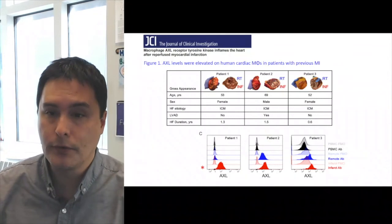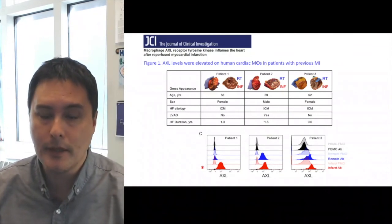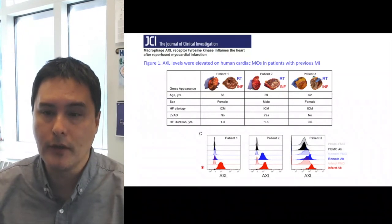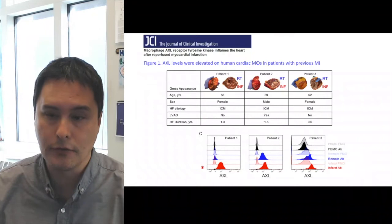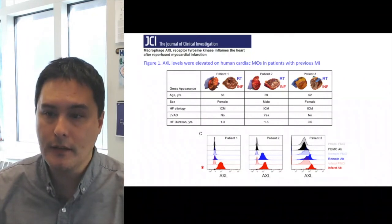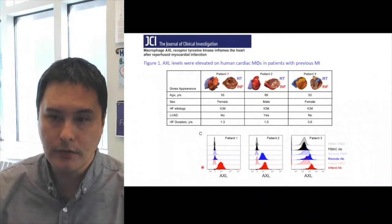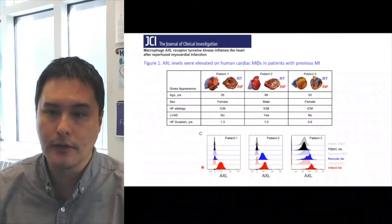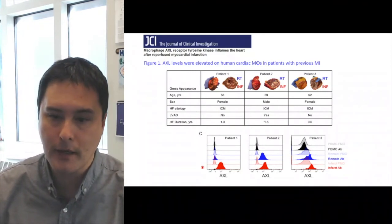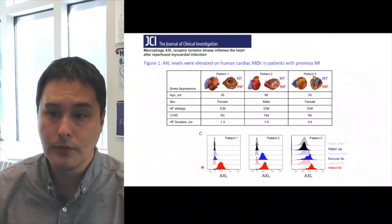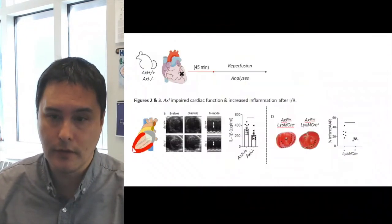One of the first experiments that Matt performed in collaboration with physician scientists here at Northwestern was to harvest patients' hearts of whom had previously been subjected to a myocardial infarction event. And as you can see in these three patients, Matt harvested both remote tissue and infarcted tissue and consistently found that AXL was expressed in cardiac macrophages that were proximal to previously infarcted regions of the heart.